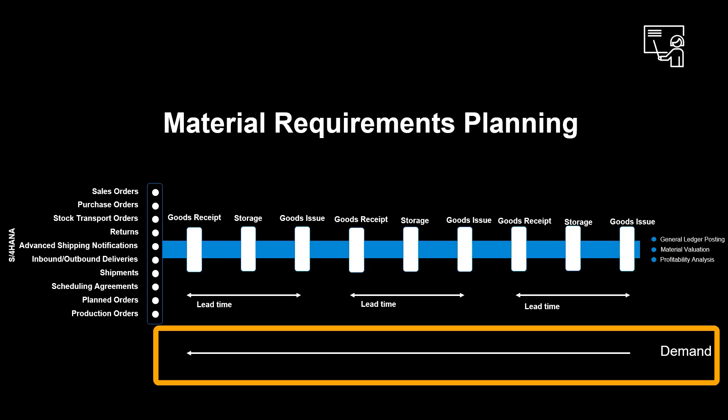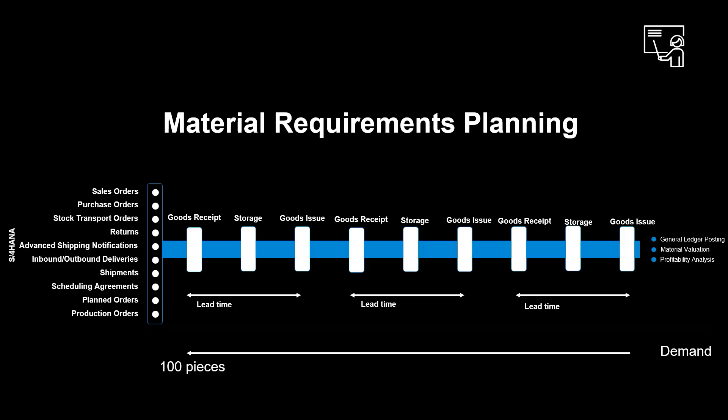Therefore, a demand of the finished good will be copied through to the lowest level at its full quantity, so a demand for 100 pieces will be copied all the way down to the lowest levels of raw materials.